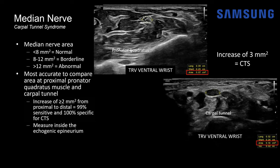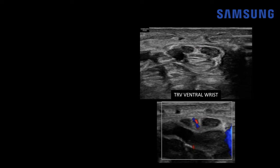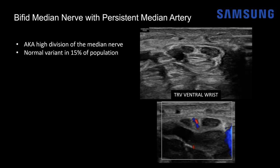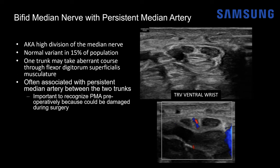There are a few anatomic variants to be aware of. Here at the carpal tunnel we can see the flexor retinaculum and what appears to be two median nerves. Between them there's a small anechoic structure, and with color Doppler flow there's flow within it, indicating it's a vessel. This is a bifid median nerve — also known as a high division of the median nerve — a normal variant seen in about 15% of the population. One trunk may take an aberrant course through the flexor digitorum superficialis muscle. This bifid nerve is often associated with a persistent median artery passing between the two trunks, which is important to recognize preoperatively as it could be damaged during surgery.